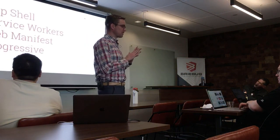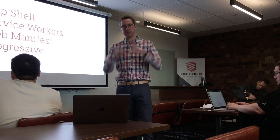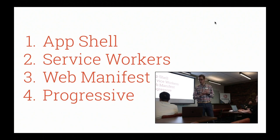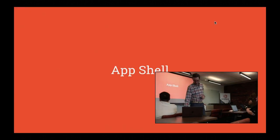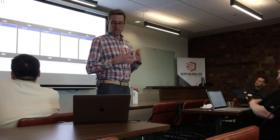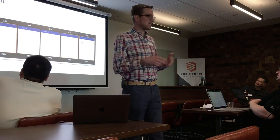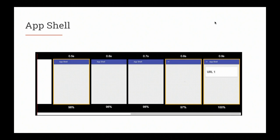There are basically four main things we need to know about to create a PWA: an app shell, service workers, a manifest file, and some progressive technologies. The app shell strategy loads just the shell of your application first — around 0.5 seconds in you've got your app shell — and then lazily loads the rest of the content behind the scenes, minimizing TTI and giving the user that initial experience really quickly.